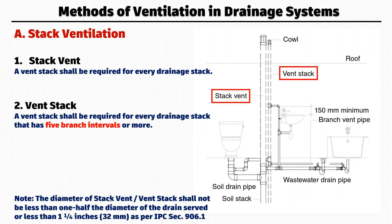Regarding size, the diameter of a stack vent or vent stack shall not be less than one half the diameter of the drain stack, and not less than 1¼ inches. For example, if the drain stack is 1¼ inches, you take the minimum of 1¼ inches. This is as per IPC Section 906.1.